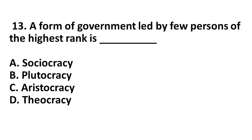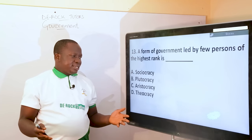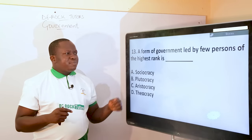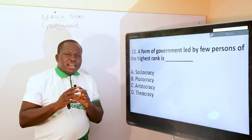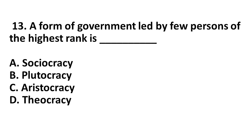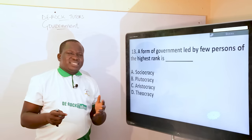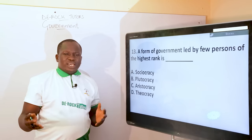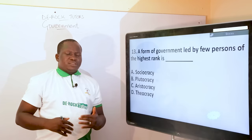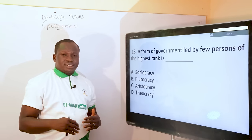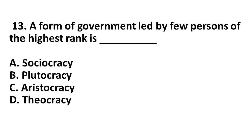Next question: a form of government led by few persons of the highest rank. Option A, sociocracy — there is nothing like that. Option B, plutocracy — refers to government led by few persons of the highest wealthy gradient, but the question is not asking about government led by wealthy people. We are asking about government led by nobles, by elites, the upper class. It won't be theocracy — theocracy comes from Greek words 'theo' meaning God and 'gravia' meaning rule, so it means government led by religious leaders. Having eliminated those options, the correct answer is C, aristocracy — government led by few persons of the highest social rank.